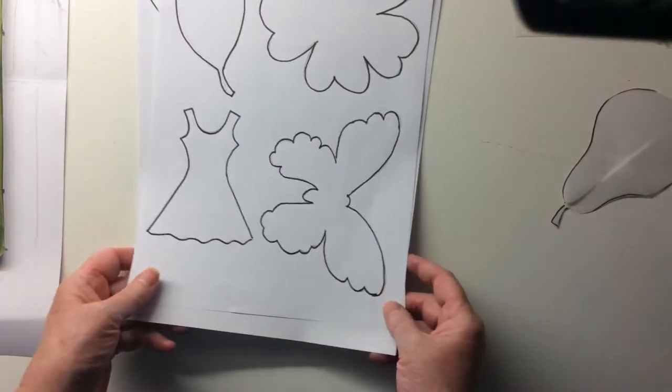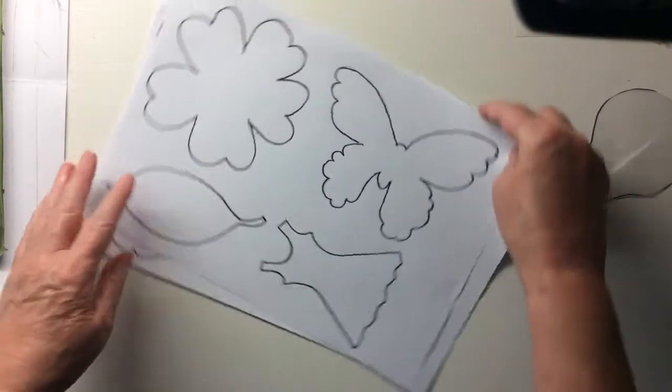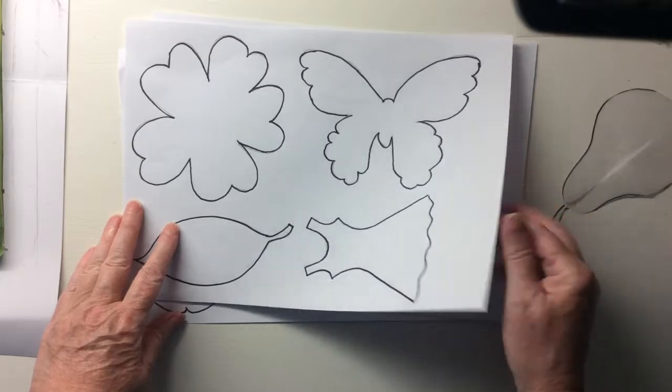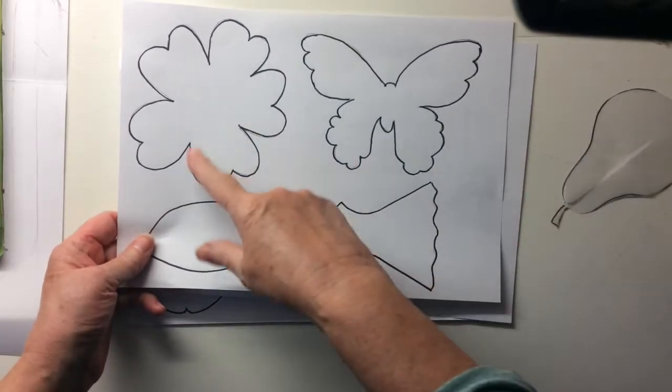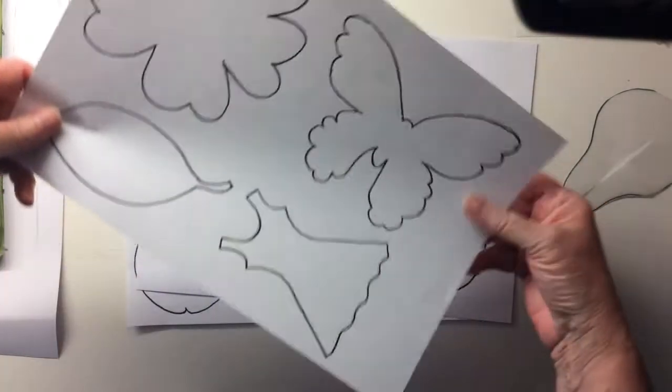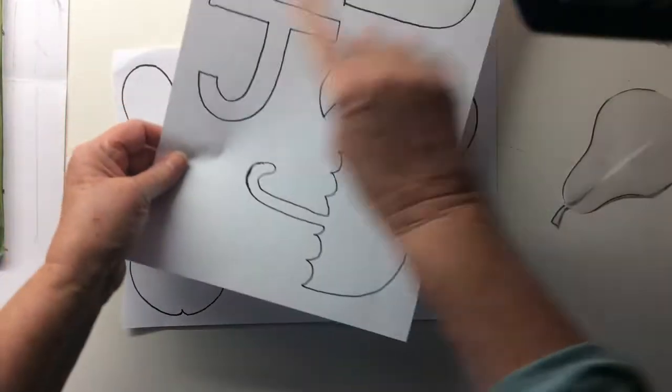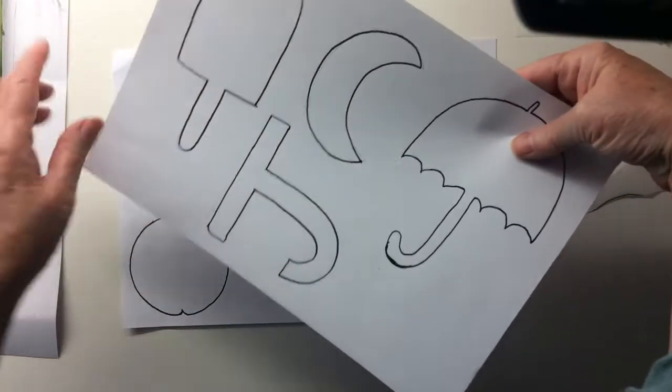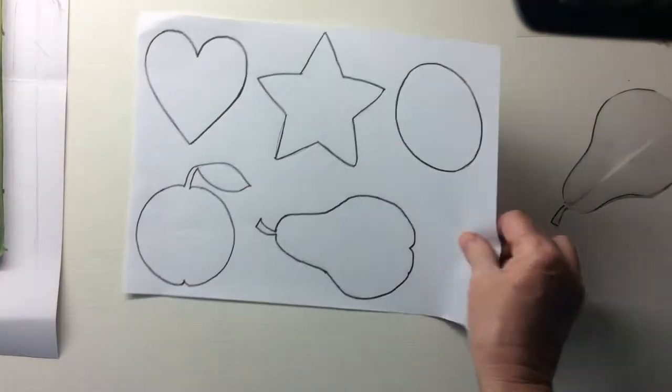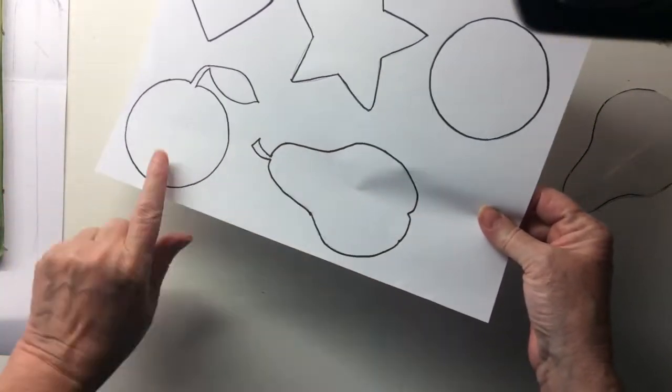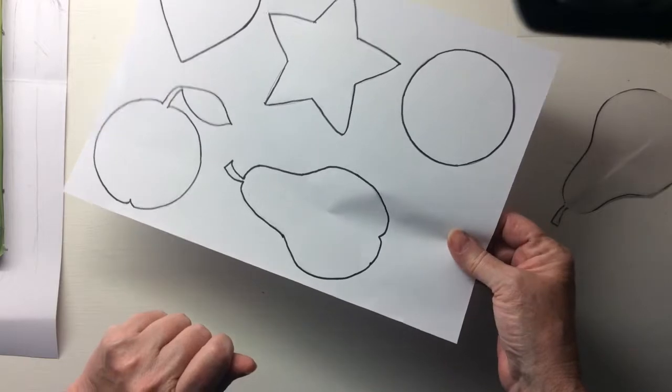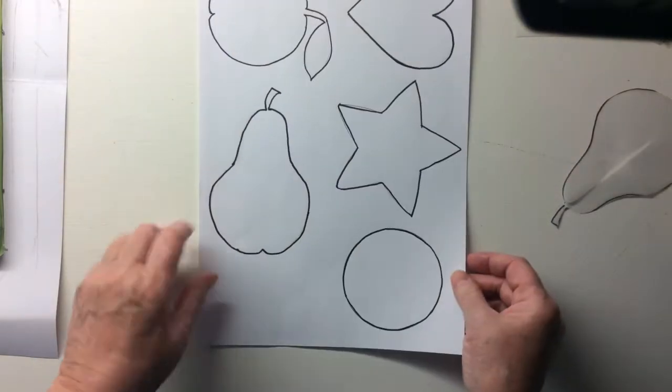The first thing that you're going to need is a design. Here's a few ideas that I've drawn: a flower, a butterfly, a leaf, a dress, the initial of your name, an ice lolly, an umbrella, hearts, stars, circles, apples, pears. Today I think I'm going to do the pear.